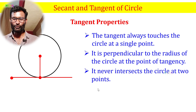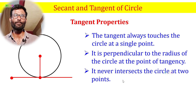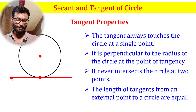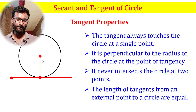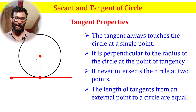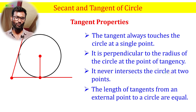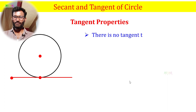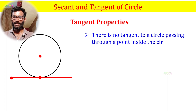Third, the tangent never intersects the circle at two points. The length of the tangent is measured from the external point to the point of tangency. The center, the point on the circle, and the external point together help define the length of the tangent.